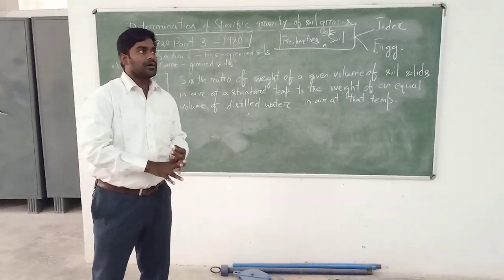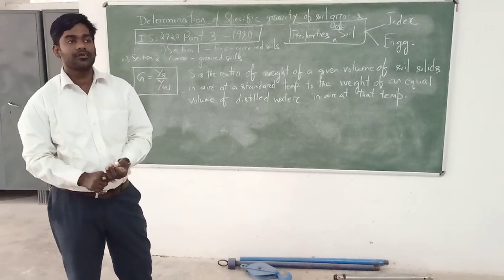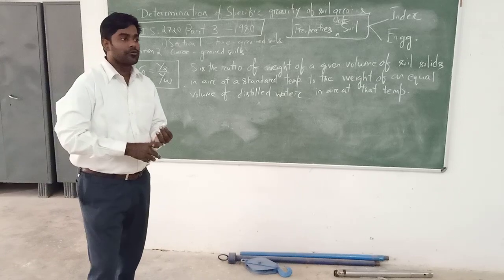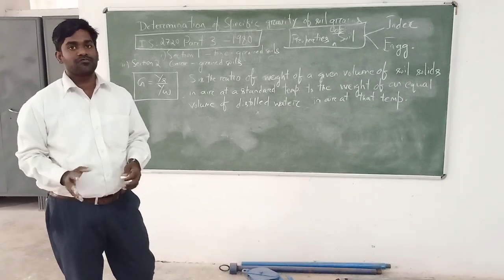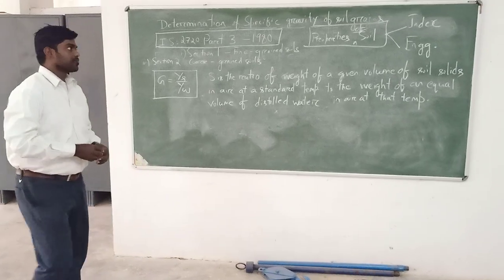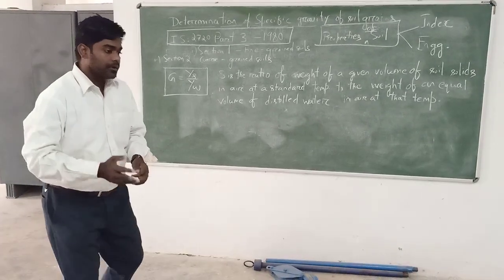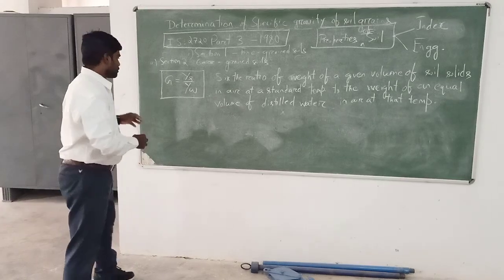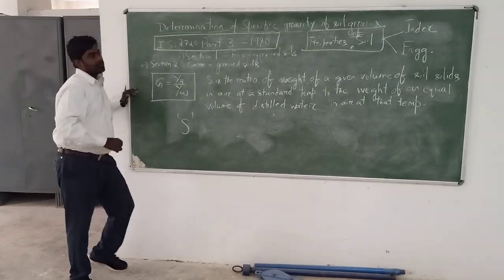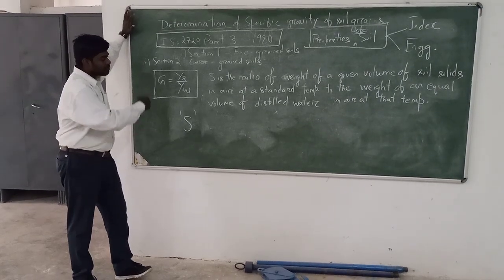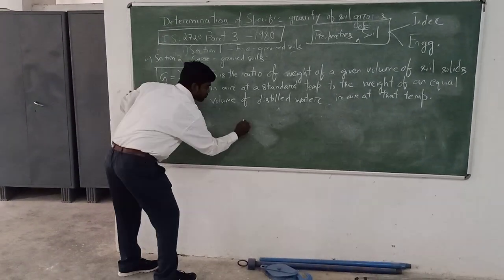Engineering properties are very important to find out, as they are required to determine the design and construction of any structure. Specific gravity is also required to find out the degree of saturation, and it can be found out using specific gravity by a formula.